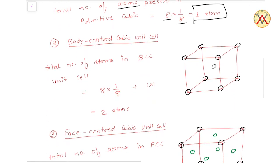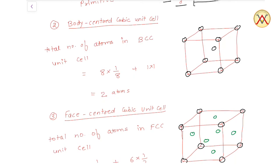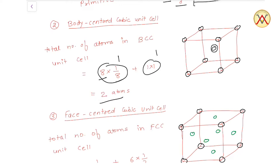Next होगा body centered cubic unit cell. BCC में primitive तो होता ही है — एक एक atom हर corner पर होता है — और साथ में एक atom cube के center पर, body center पर रखा होता है. Corner वालों से 8 × 1/8 = 1 atom, और body centered वाला पूरी तरह से unit cell के अंदर होता है इसलिए 1 atom. इस तरह body centered cubic में total 2 atoms होते हैं.